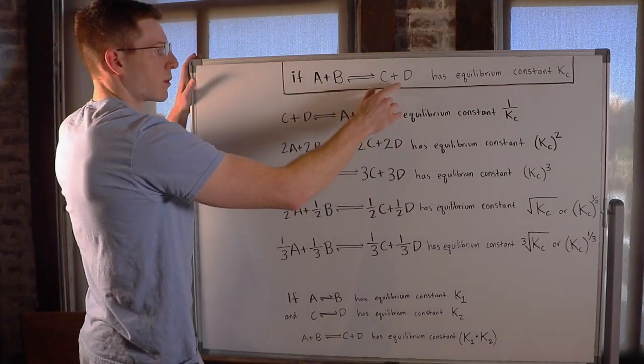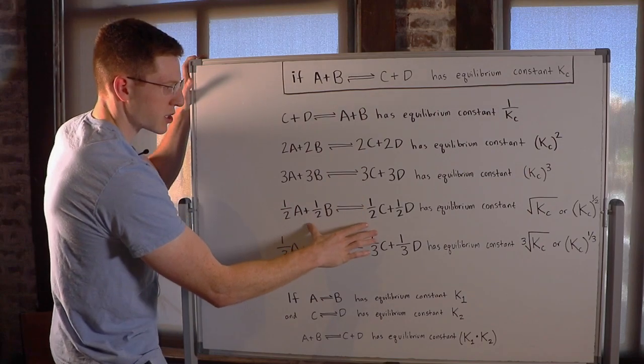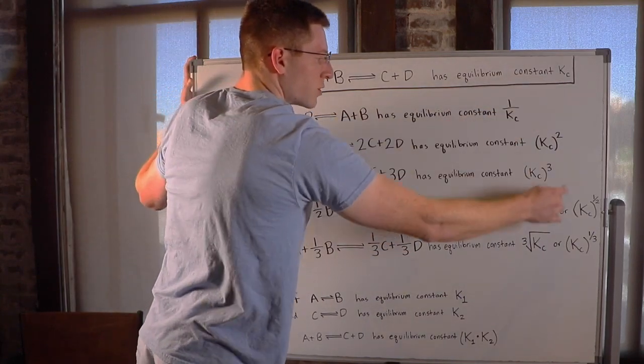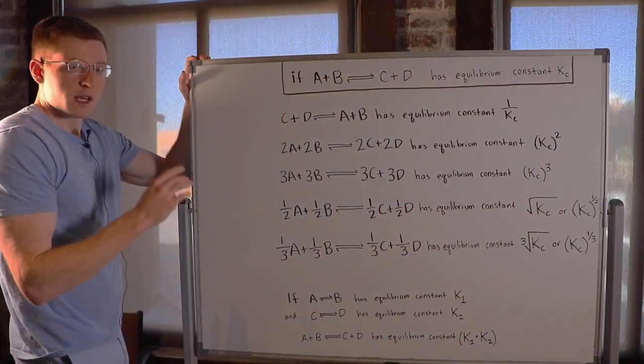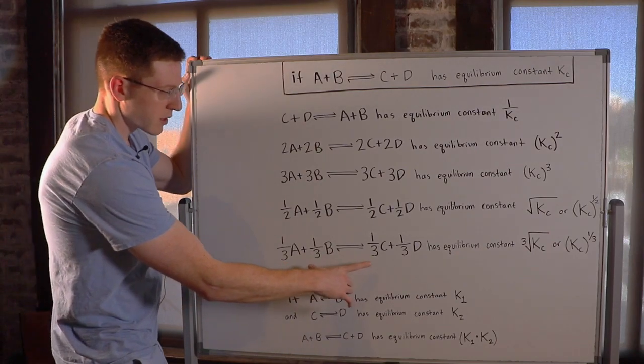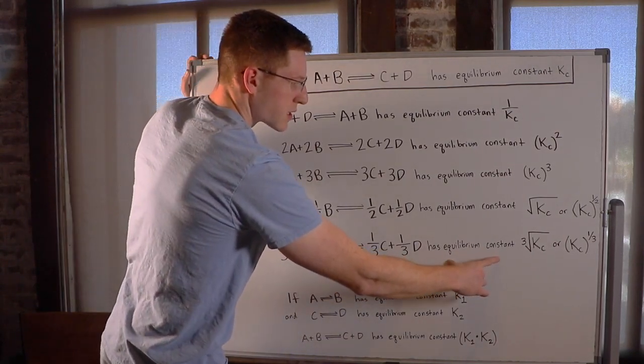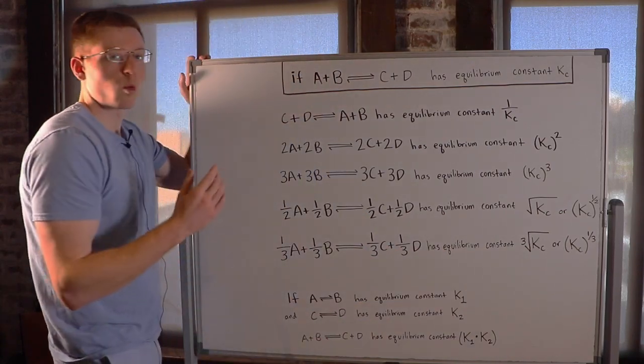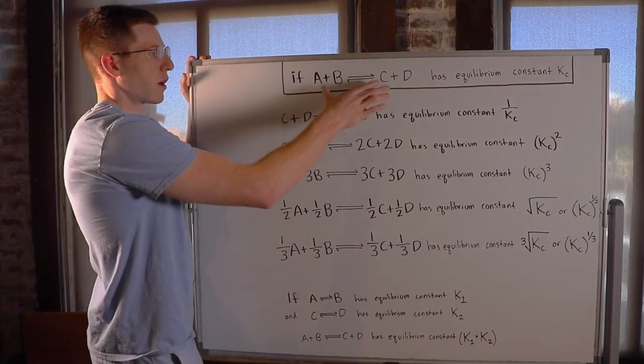So if you start with A plus B in equilibrium with C plus D, and you divide everything by 2, you have to take the square root of the KC. Similarly, if you divide everything by 3, then you get an equilibrium constant of the cubed root of KC, or KC to the 1 third power.